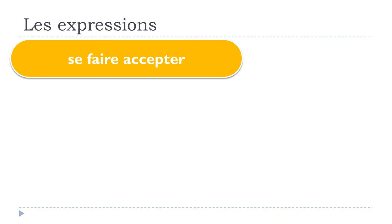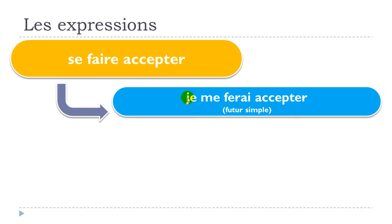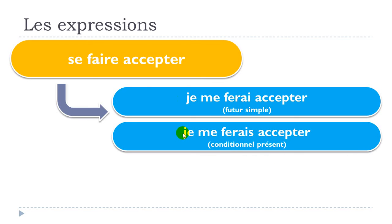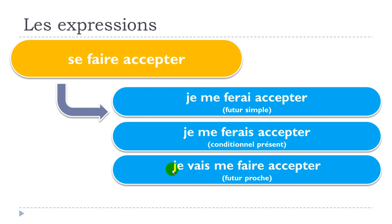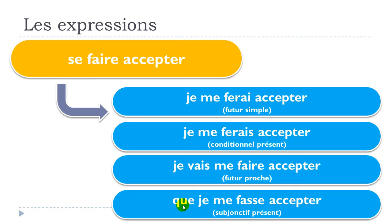Let's conjugate this expression at different tenses. Futur simple: je me ferai accepter. Conditionnel présent: je me ferais accepter — phonetically similar but note the extra 's' in writing. Futur proche: je vais me faire accepter. Subjonctif présent: que je me fasse accepter.